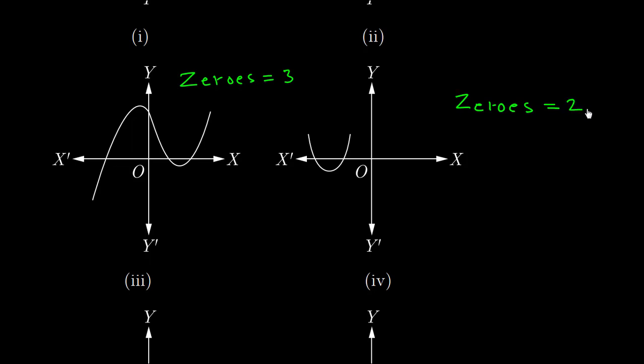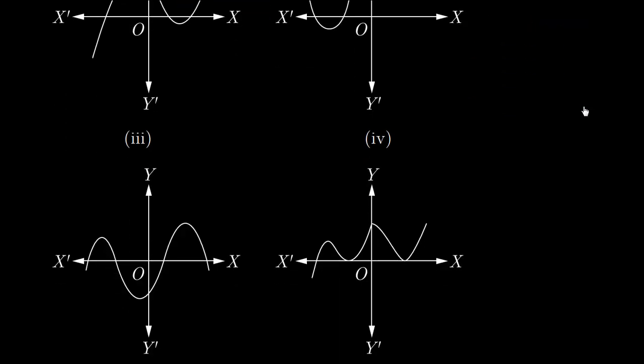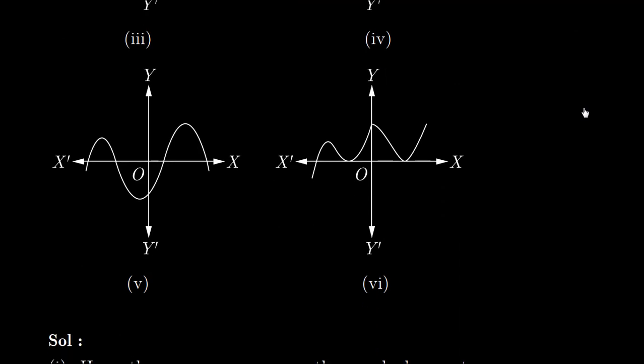Next question. In this graph, we have zeros: one, two, three, four — zeros: four.